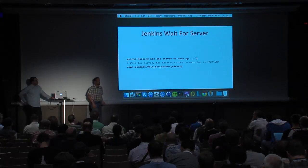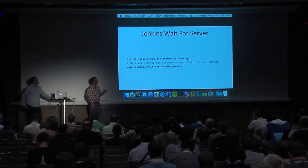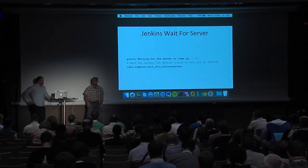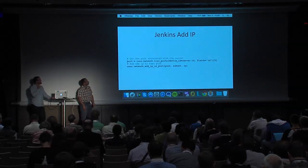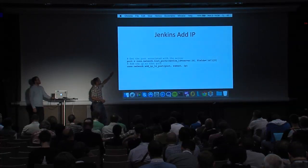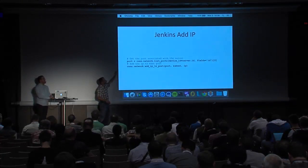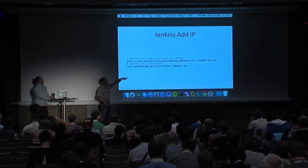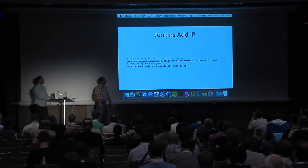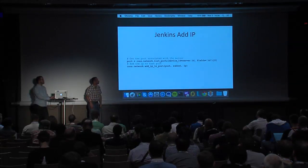After the create, it's going to create a floating IP. Then it calls wait_for_status — by default it expects to wait for an 'active' status, but you could pass a different status if you wanted. Finally, we're going to add the IP to the port associated with the server. This first line gets the port using the device ID as a filter, and then we assign that floating IP to our port.